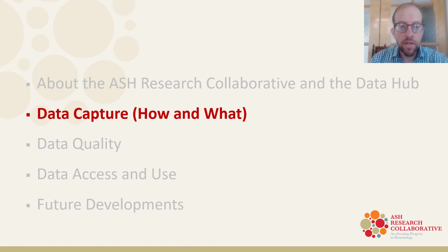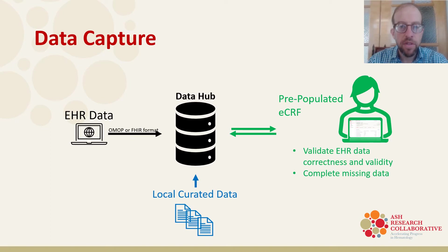Now let's talk about how data are captured within the Data Hub. Data are currently sent to the Data Hub using the following data submission pathways: the Observational Medical Outcomes Partnership, or OMOP, Common Data Model, and Fast Healthcare Interoperability Resources, or FHIR. Using standards-based data submission pathways allows for harmonized data sets, which in turn allow for scalability and strategic alignment across our programs. The data collected then pre-populates an electronic case report form so the site can curate and validate their EHR data, as well as collect additional data that are not always captured well within the structured fields within the electronic health record.